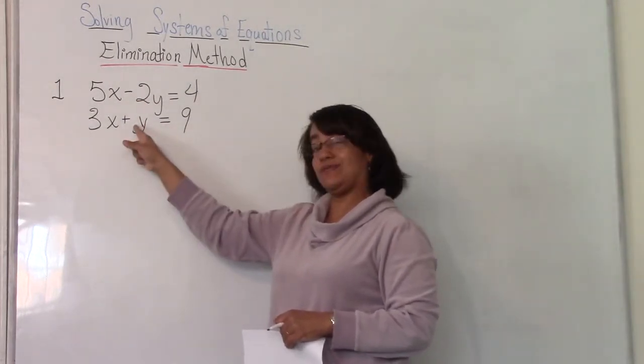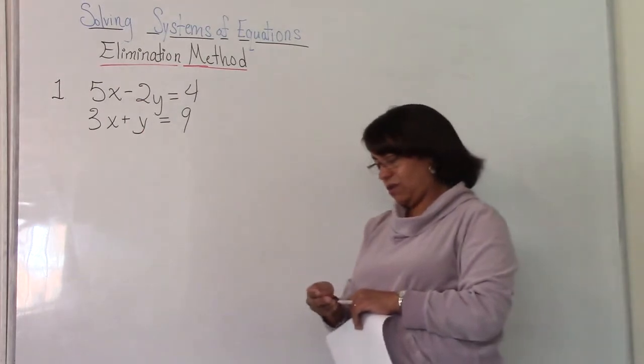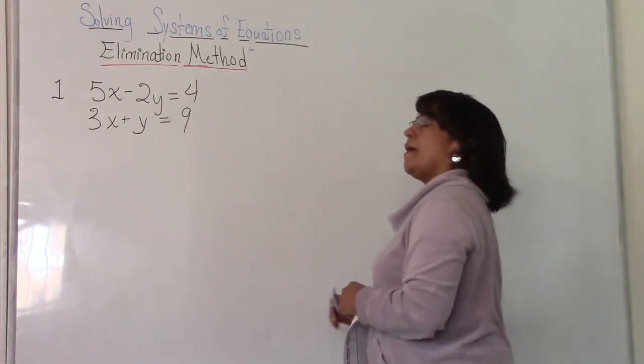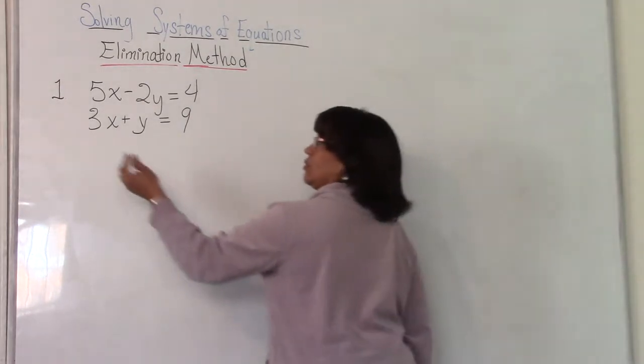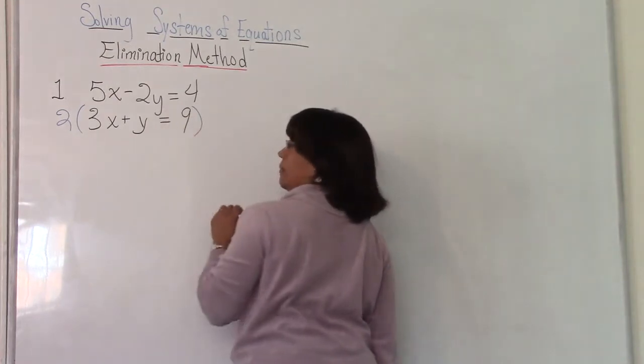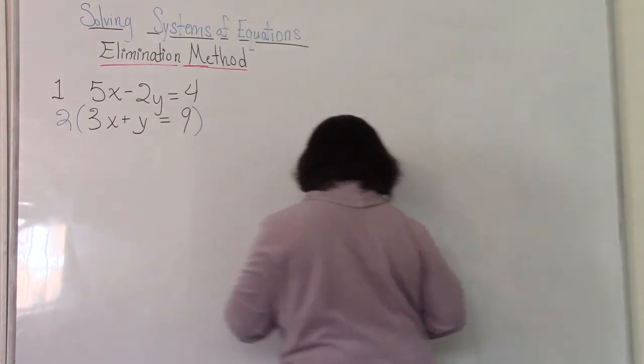Right, we would need a positive 2 right there. So you are allowed to multiply by 2 so you can get a positive 2. But you have to multiply every term by 2 so you don't change the equality. So we multiply every single thing by 2. And so now here's what I'm going to do.